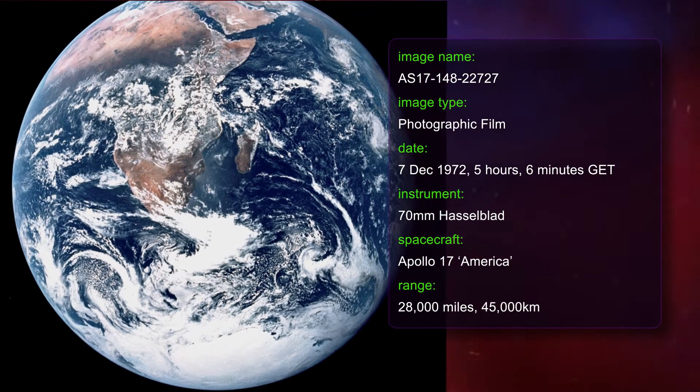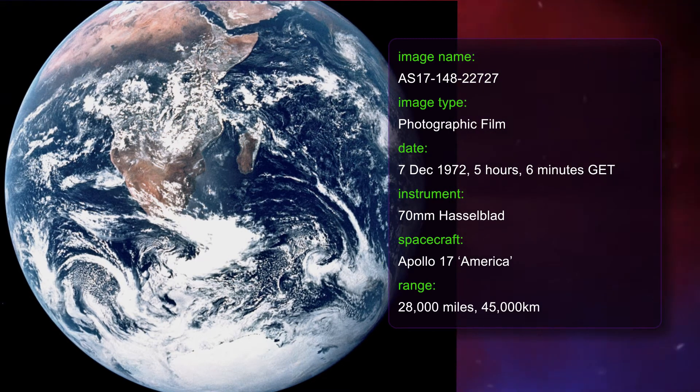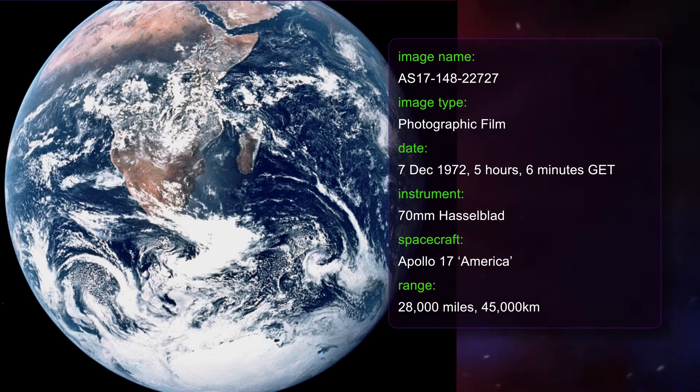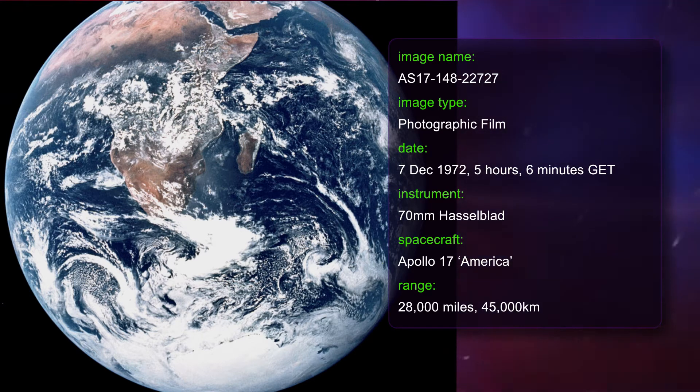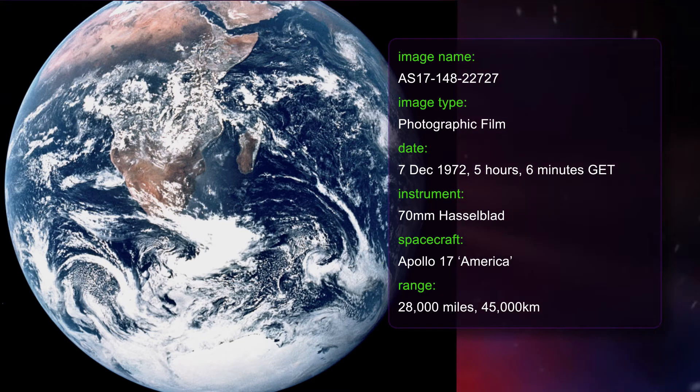The Blue Marble is one of the most widely distributed photographic images in existence. The image is one of the first to show an almost fully illuminated Earth disk, as the astronauts had the sun behind them when they took the image. To the astronauts, the slightly gibbous Earth had the appearance and size of a glass marble, hence the name.